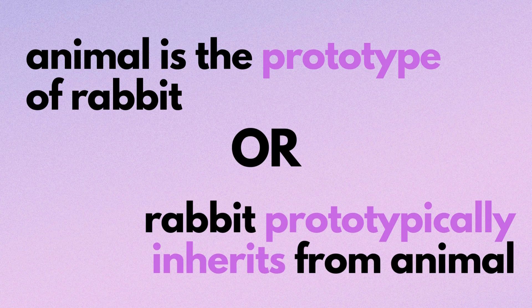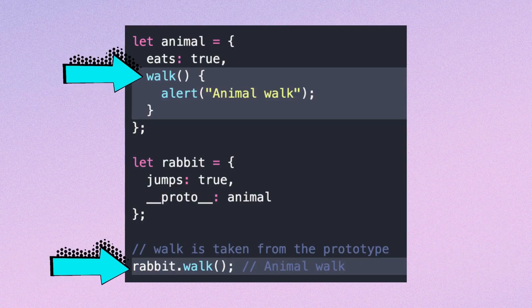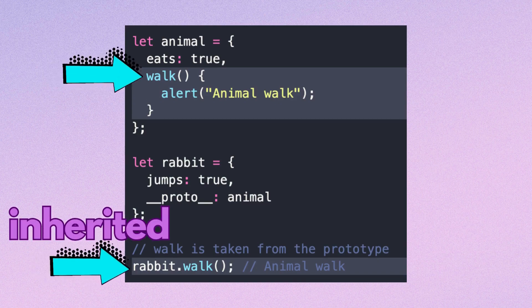Here we can say that animal is the prototype of rabbit, or rabbit prototypically inherits from animal. So if animal has a lot of useful properties and methods, then they become automatically available in rabbit. Such properties are called inherited.